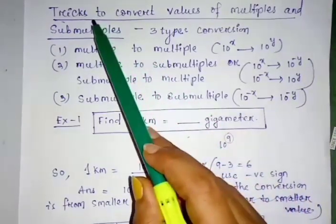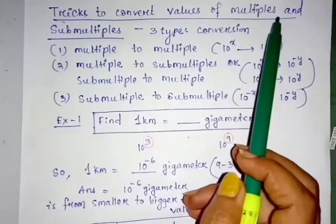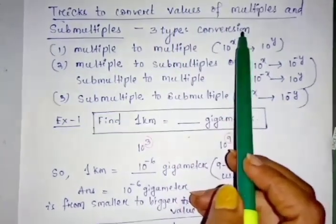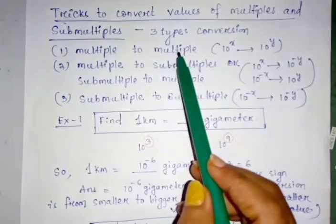Hello, here is the trick to convert values of multiples and submultiples. There are three types of conversion between multiples and submultiples.